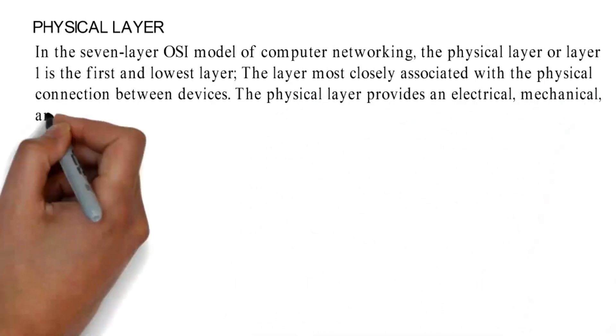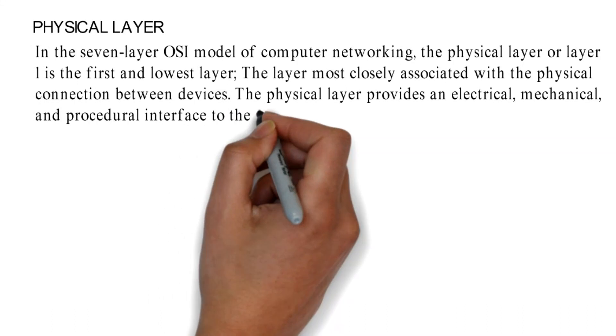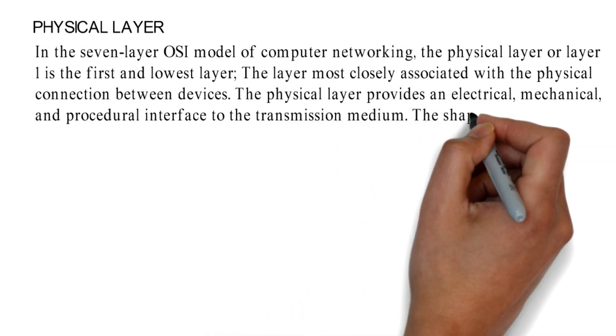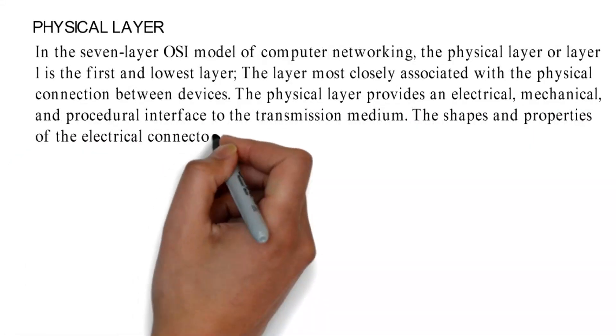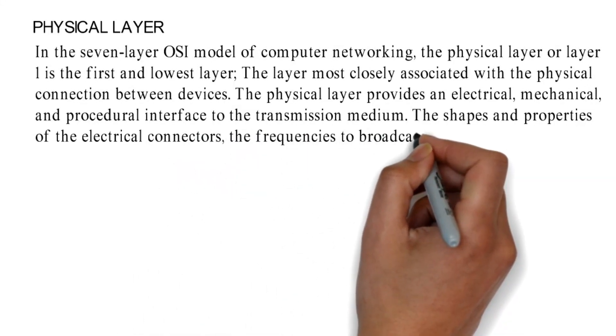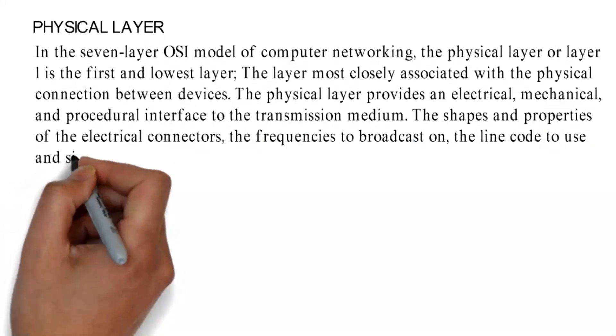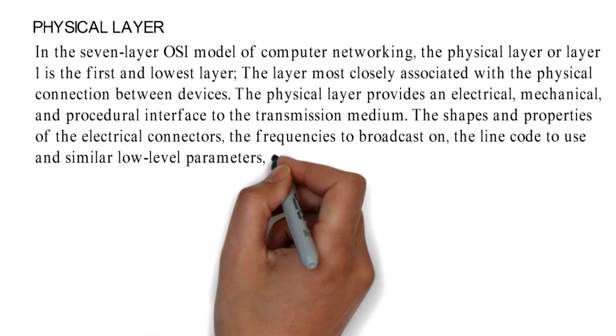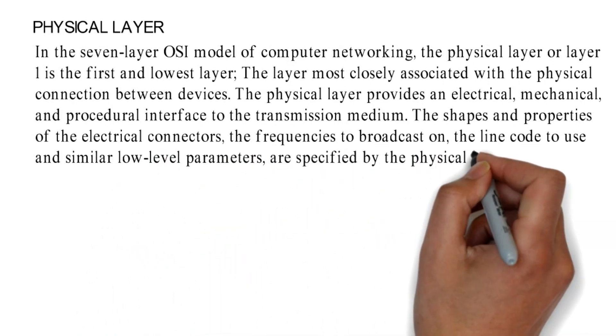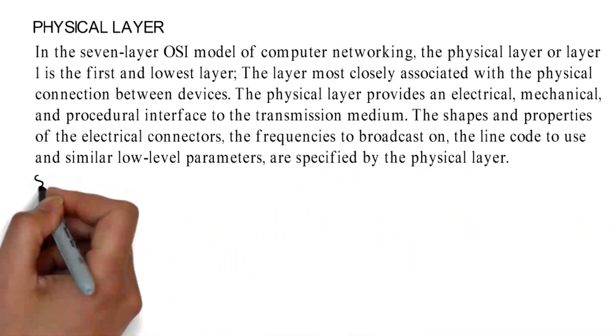The physical layer provides an electrical, mechanical, and procedural interface to the transmission medium. The shapes and properties of the electrical connectors, the frequencies to broadcast on, the line code to use, and similar low-level parameters are specified by the physical layer.